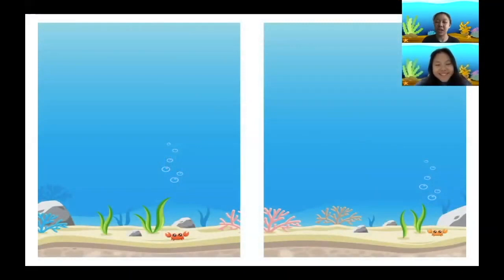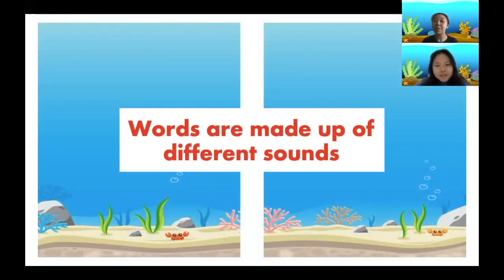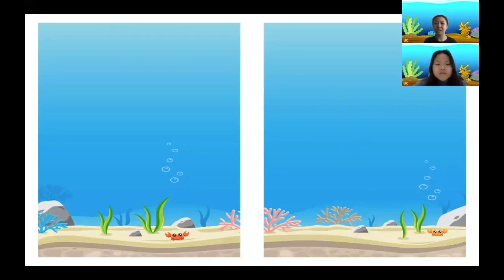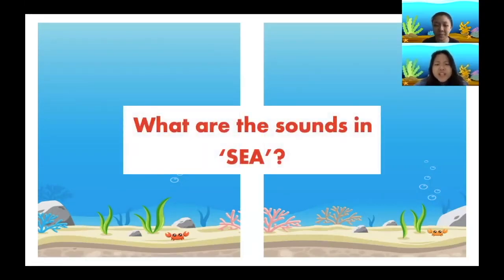Now we are going to learn about the sounds in words. Every word is made up of different sounds. Oh no, what happened to the sea, Joyce? The sea is split up — the animals won't have anywhere to play in! You're right, Joyce, but how can we fix the sea? To put them back together, we need to think about the different sounds.